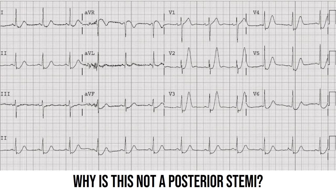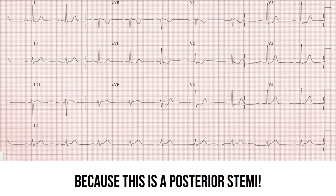Lastly, why is the DeWinter T-Wave pattern not a posterior STEMI? Just remember the definition: 1-3mm upsloping ST depression at the J-point in leads V1 to V6 that continue into tall, positive, symmetrical T-Waves. On the other hand, this is a posterior STEMI. The ST depression is not upsloping and appears to have a predilection for V2 and V3. The T-Waves just aren't prominent or bulky enough.